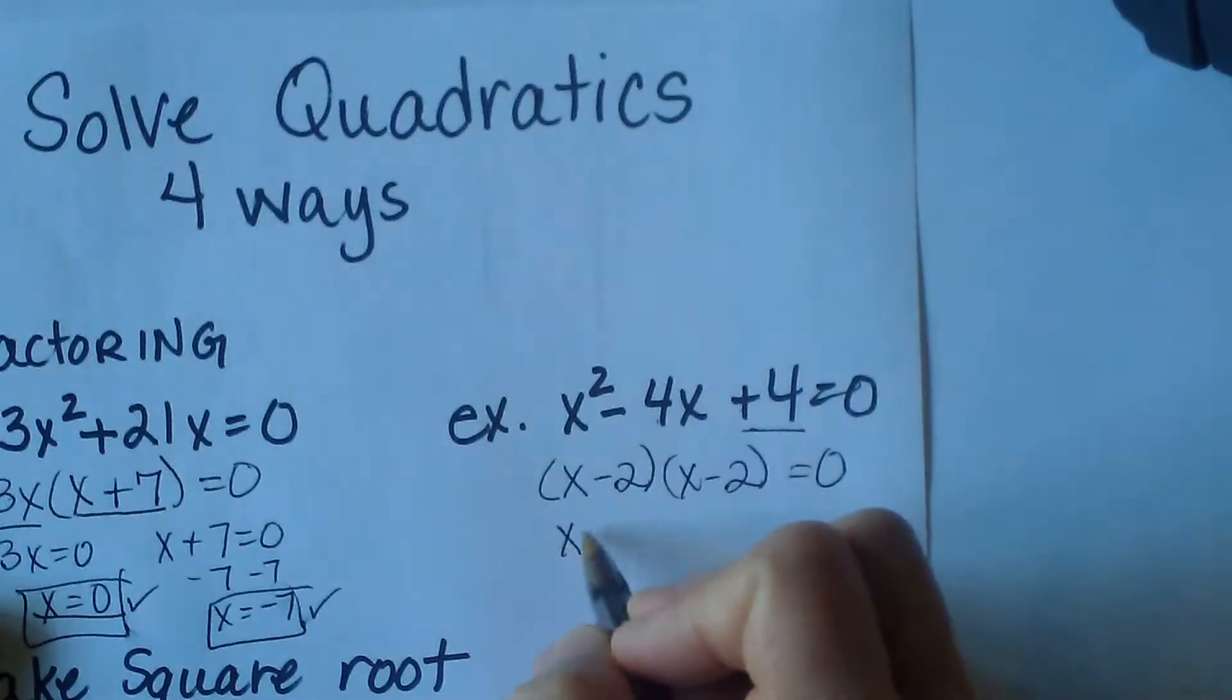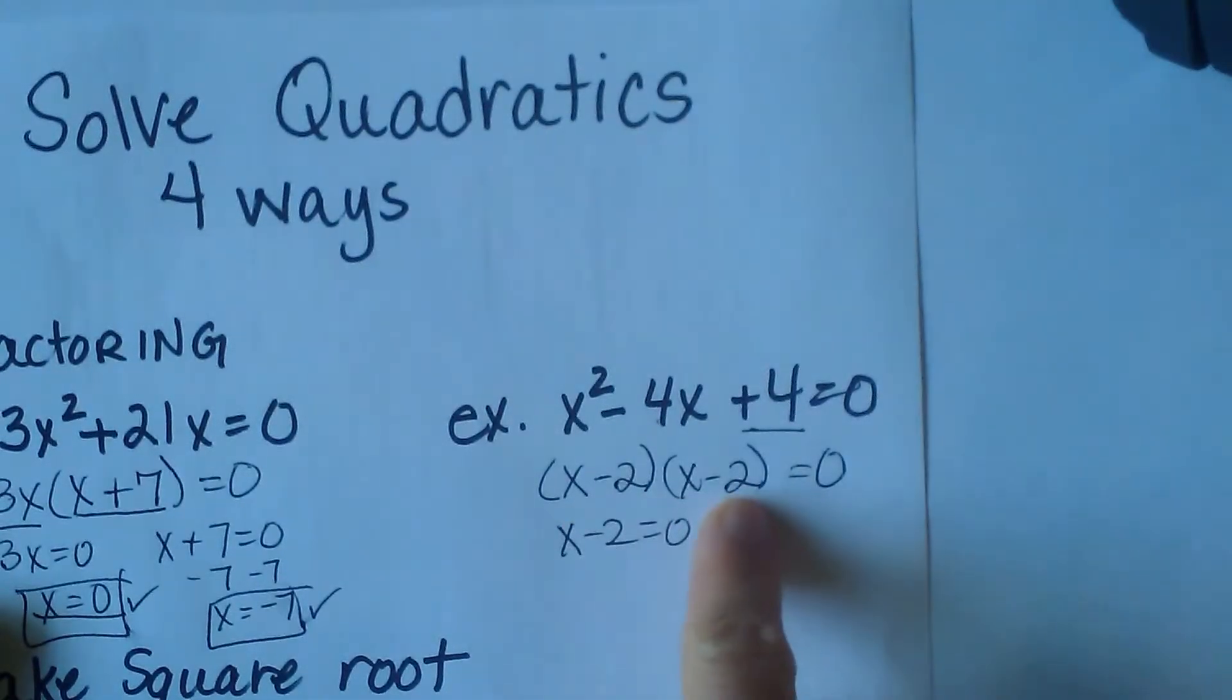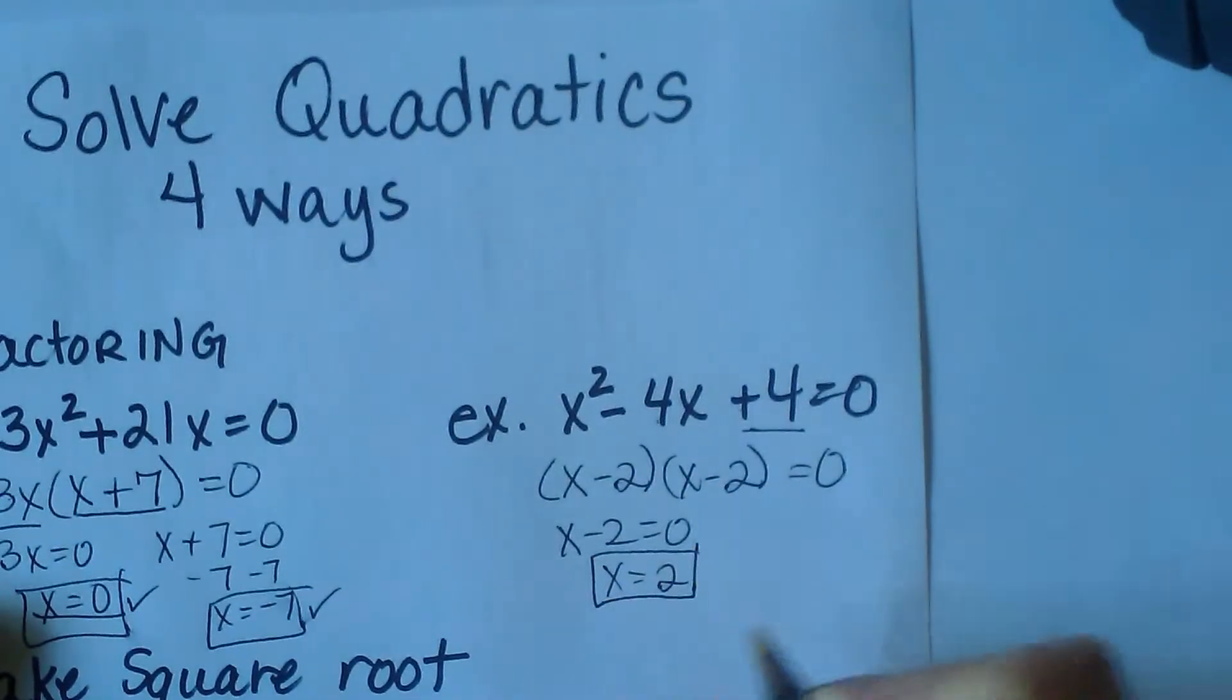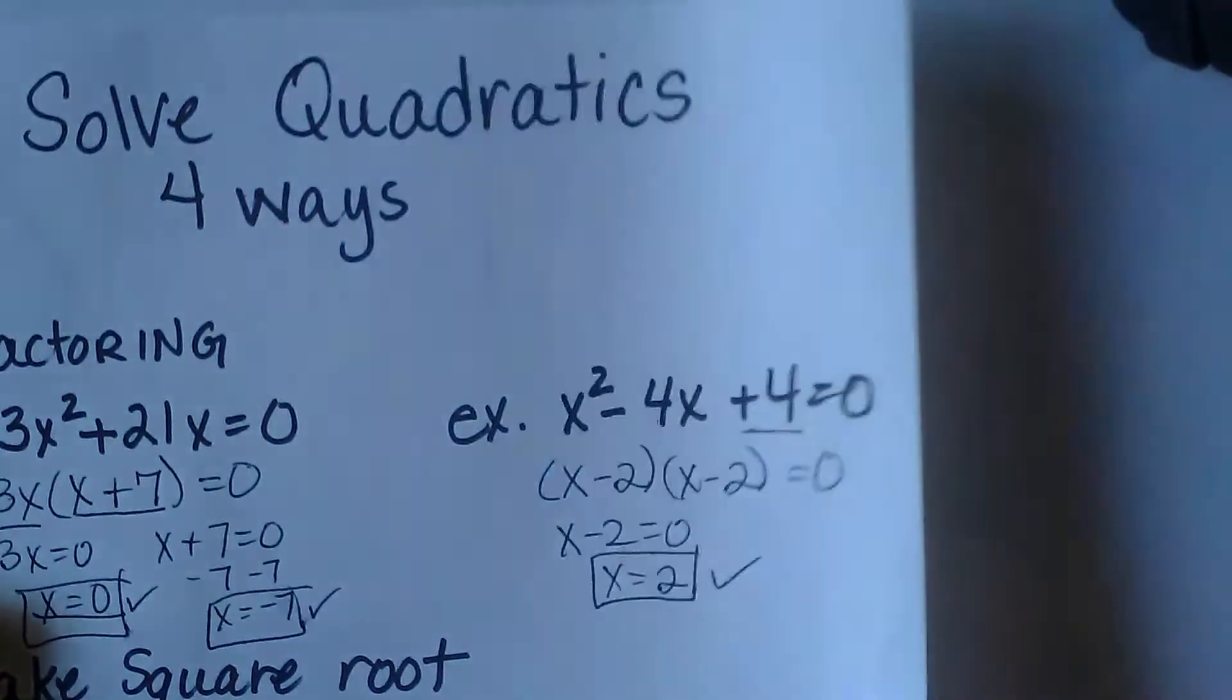And again, set your factors equal to zero. Now what's different about this one is we have the same factor, so you only have to set one of them equal to zero to find our one and only solution. So x is 2. That's reviewing factoring.